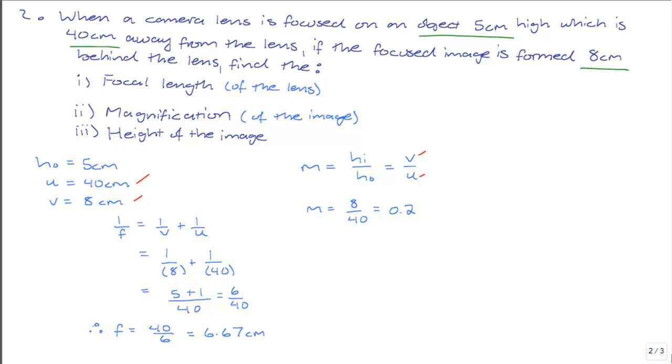And after that we are asked to find the height of the image. Like we said earlier, the magnification can be calculated by taking the image distance and the object distance, or by taking the ratio of the image height and object height.